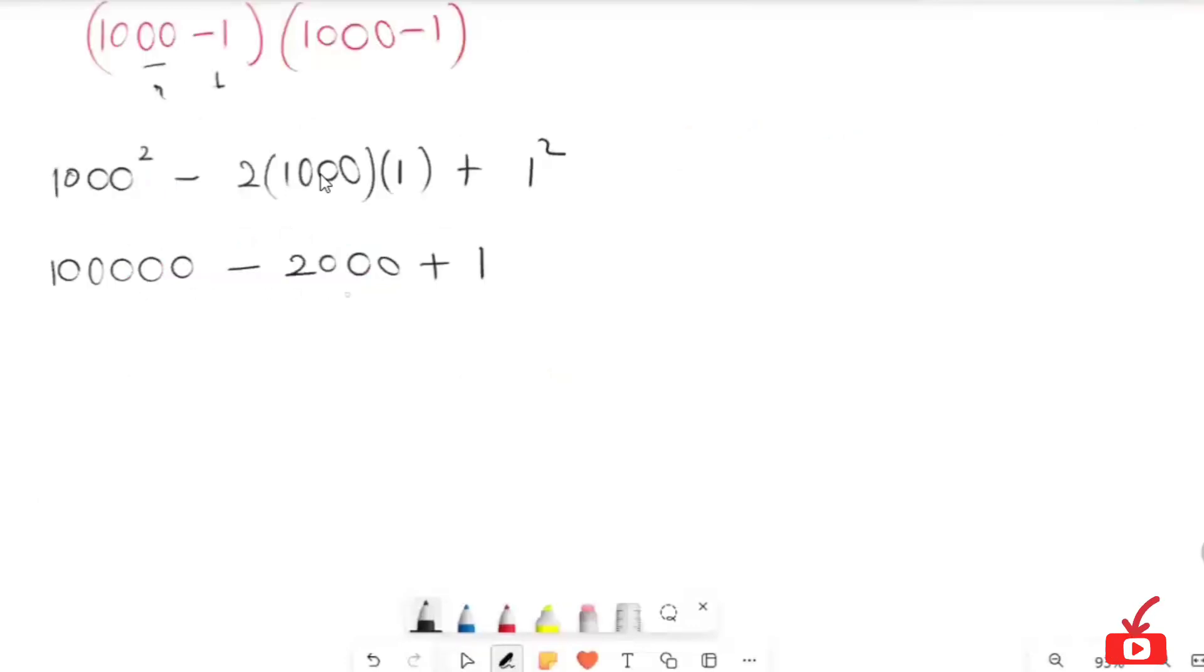And multiplying by 999 from this value, I will get 998000 plus 1. So the final answer we get is 998001. This is our final answer.